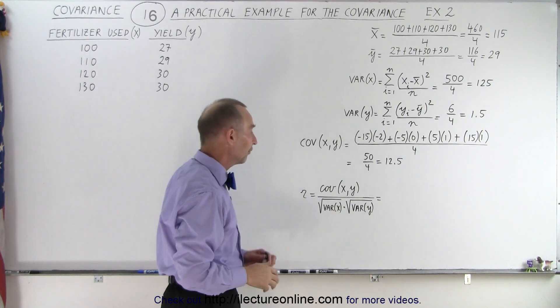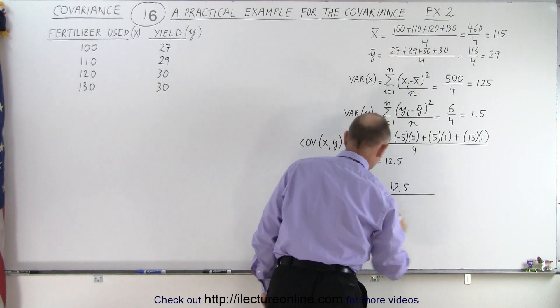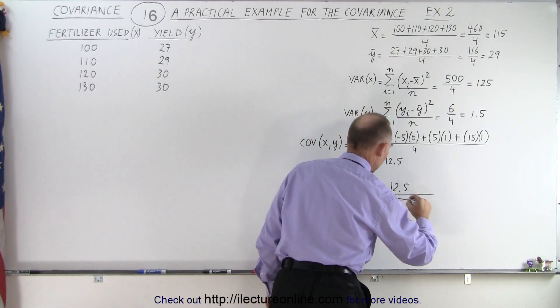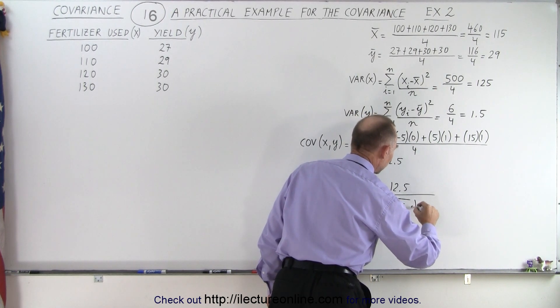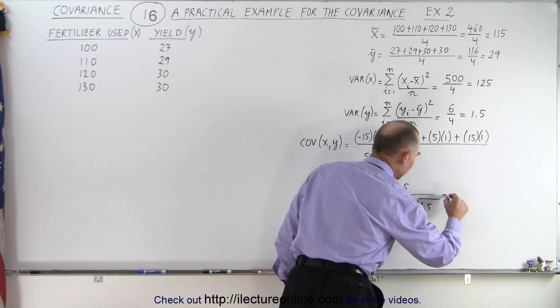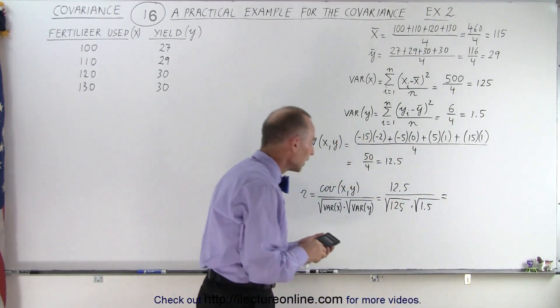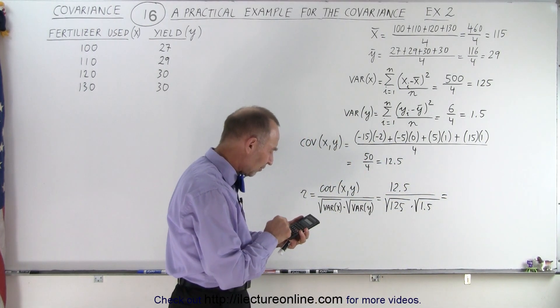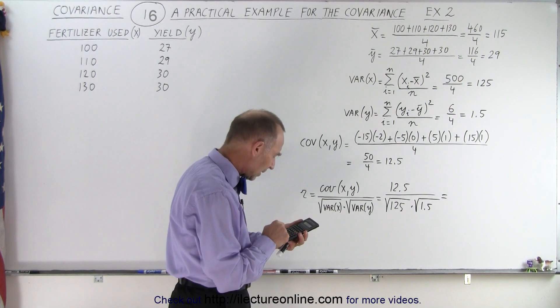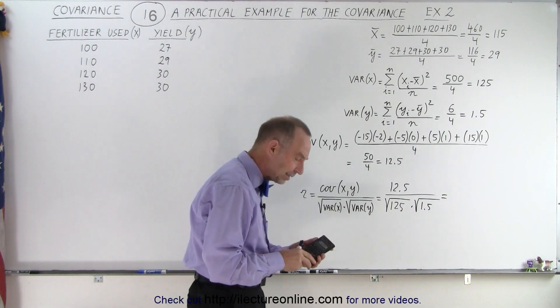Now let's calculate the correlation coefficient. We start with the covariance, which is 12.5, and divide it by the square root of the variance in X, which is the square root of 125, and we also divide it by the square root of the variance in Y, which is the square root of 1.5. The square root of 1.5 is close to 1, so that doesn't change the numerator much. So we get 12.5 divided by the square root of 125, divided by the square root of 1.5, and we still get 0.91.